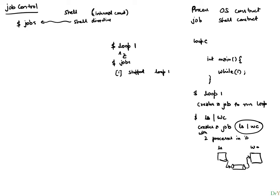So that's what jobs does — it's a job that was launched but it's currently stopped. This is a concept specific to the shell itself. There are other shell commands: BG and FG. If at this point I say BG, I'm saying there is a job that has been stopped and I want to run it in the background. If I do jobs again, I'll see there is a process and it is currently running in the background.